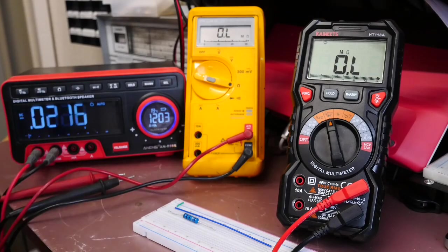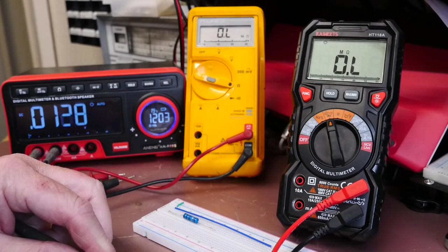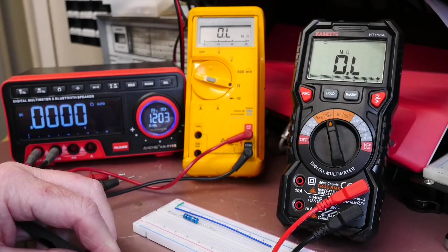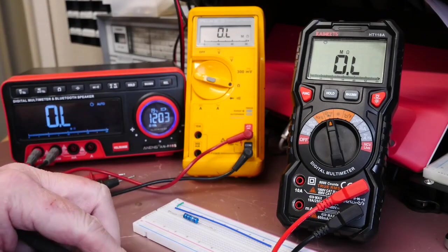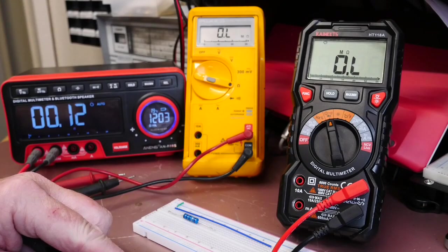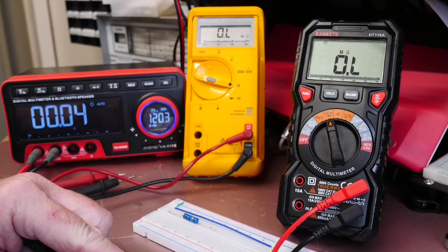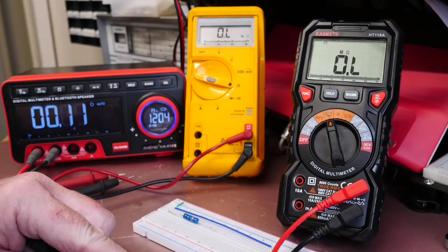So first thing we're going to do is test with the Anang. I'm just going to connect the probes together on resistance and as you can see the reading is fluctuating below 0.1 ohm. It's fluctuating about and I guess what it's trying to do is measure the resistance of the leads.